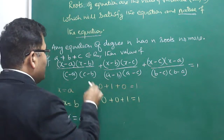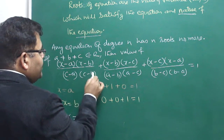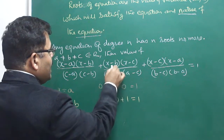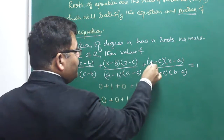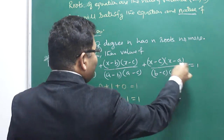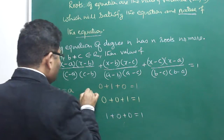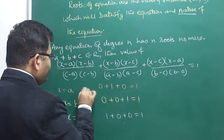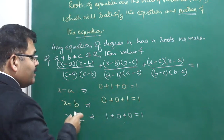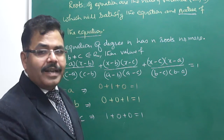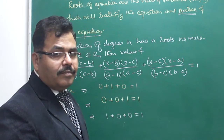If I put x equal to c, then (c-a)/(c-a) and (c-b)/(c-b) both cancel to give 1, but (c-c) is 0, making the last term 0. So 0 + 0 = 1? No — it comes to 0, which satisfies the equation. So a, b, and c all satisfy the equation, giving three values for what should be a quadratic.